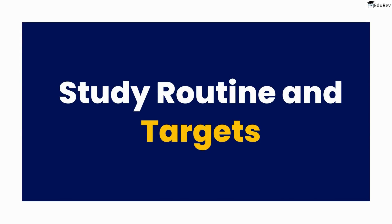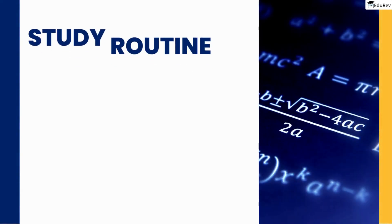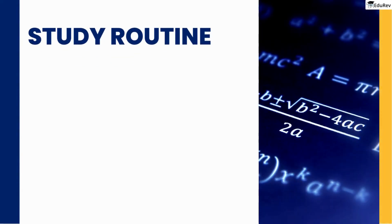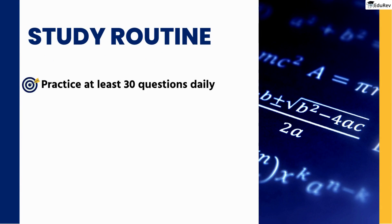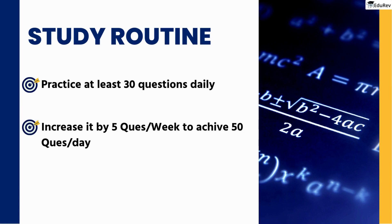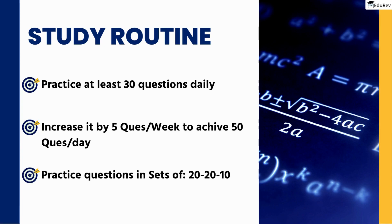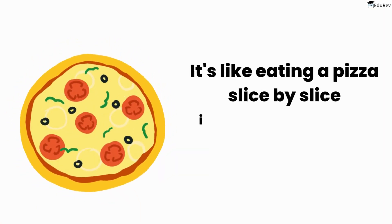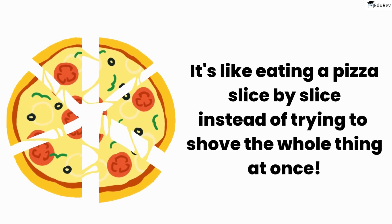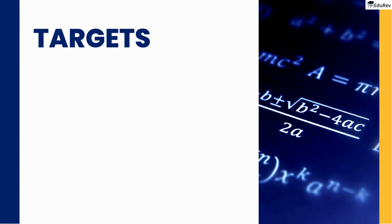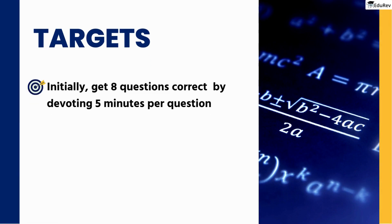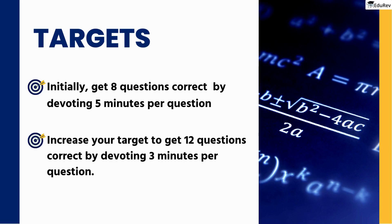With the study material sorted, let's shift our focus to setting up a study routine and targets. Start with 30 questions per day and gradually increase by 5 questions every week until you reach your target of 50 questions per day. Don't try to solve all the questions in one go — break them down into sets of 20-20-10. Once you're comfortable, start setting targets of getting 8 questions correct by devoting 5 minutes per question during the initial stages. Gradually increase your pace and accuracy to achieve 12 questions correct by devoting 3 minutes to each question.